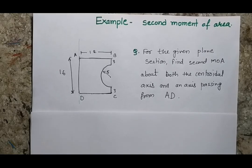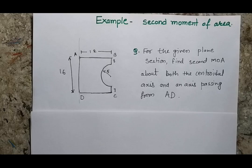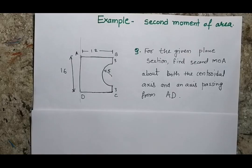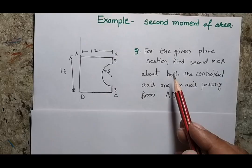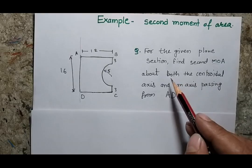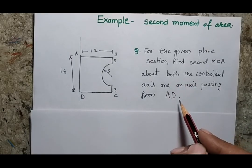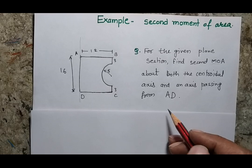We will discuss a very simple but important problem of identification of second moment of area about different axes of an irregular shape. In this problem, we have to identify the moment of area (MOA), which basically stands for the second moment of area, about both the centroidal axes as well as about an axis passing from the line AD.